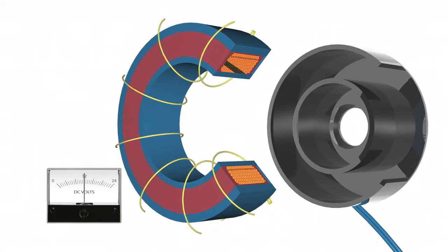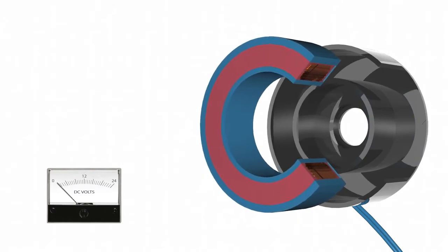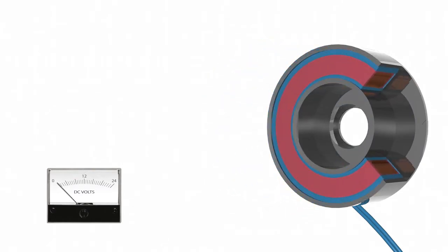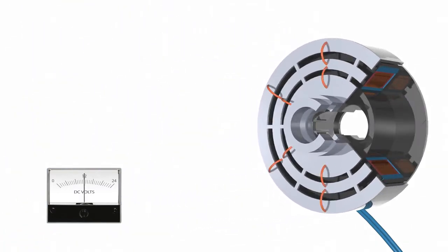When voltage or current is applied to the clutch, the coil becomes an electromagnet and produces magnetic lines of flux. This flux is then transmitted between the small air gap between the field and the rotor. The rotor then becomes magnetized and sets up a magnetic attraction loop between the rotor and the armature.